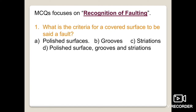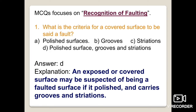The first question deals with: what is the criteria for a covered surface to be called a fault? The options are polished surface, grooved surface, striations, or all of the above. Option D is the right answer — an exposed or covered surface may be suspected of being a faulted surface if it is polished, carries grooves, or striations.